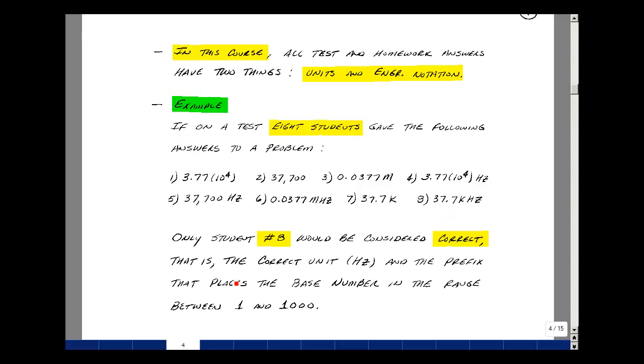Although all these answers are equivalent, only student number eight would be considered correct and get full points. This answer has the correct unit in hertz, and the prefix was selected to put the base number between one and a thousand. Again, we call this engineering notation.